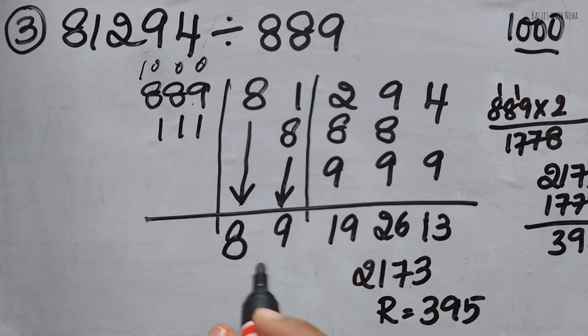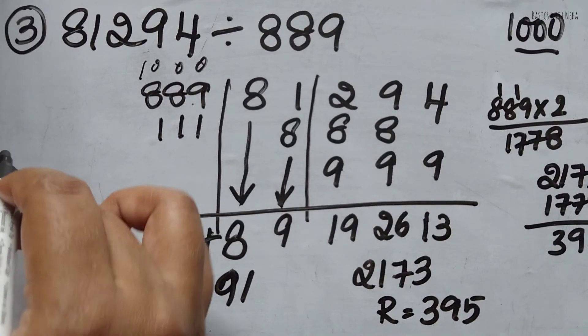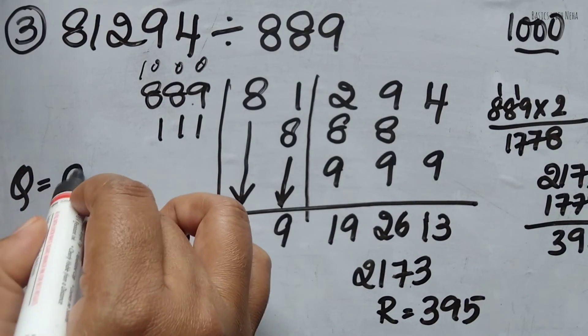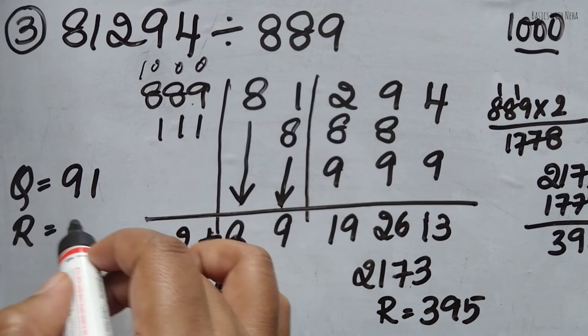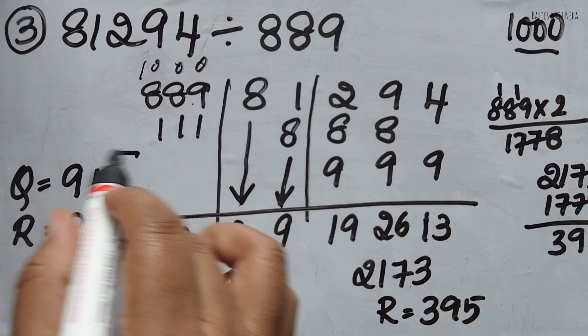And then here, since I have taken 2, I'm going to add 2 to this. It will be 91. So the answer to this question is quotient being 91 and remainder is 395. And this is my final answer.